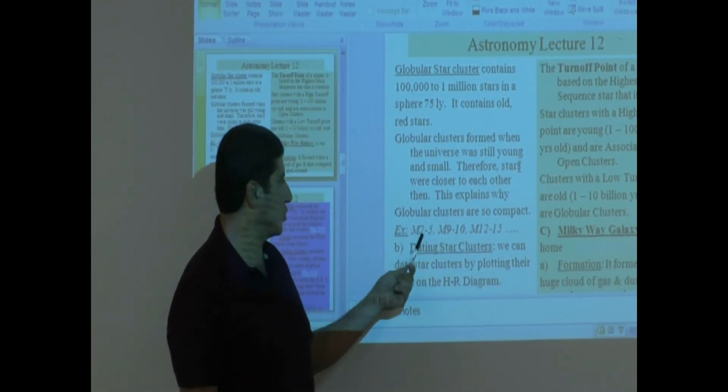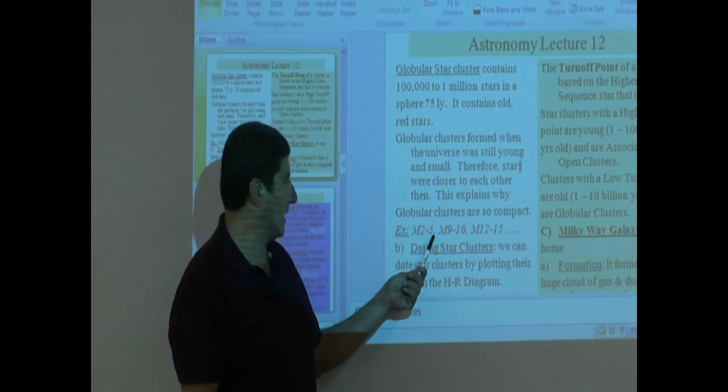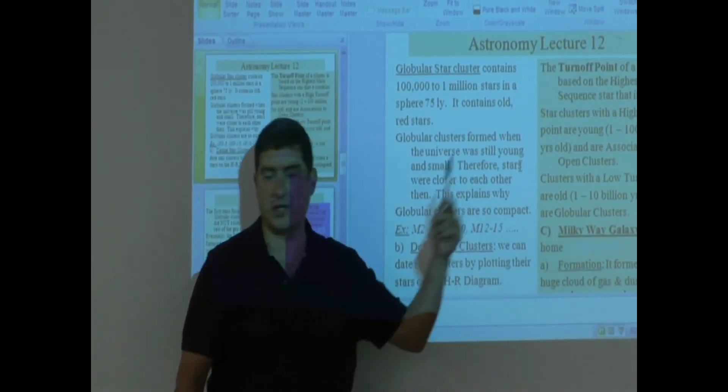From the Messier catalog, which ones are globular clusters? M2, M3, M4, M5, M9, M10, 12, 13, 14, 15, and so on and so on.